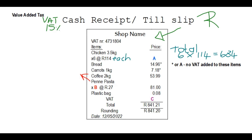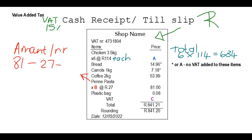We need to figure out how many packets of pasta this person bought. To find the number, you divide. The total cost was R81 and each pack was R27, so 81 divided by 27 means this person bought three packets of pasta.